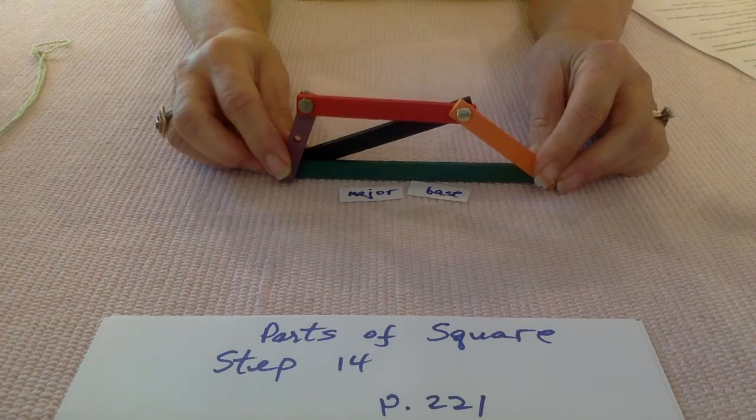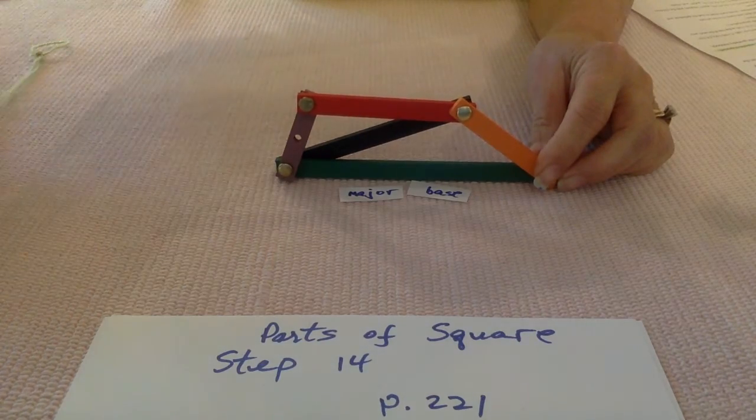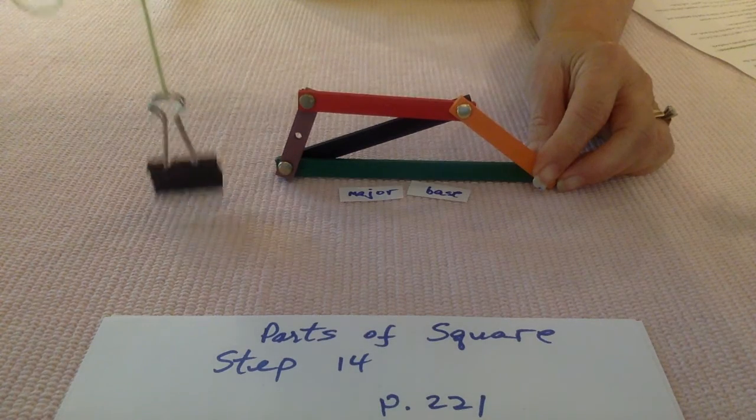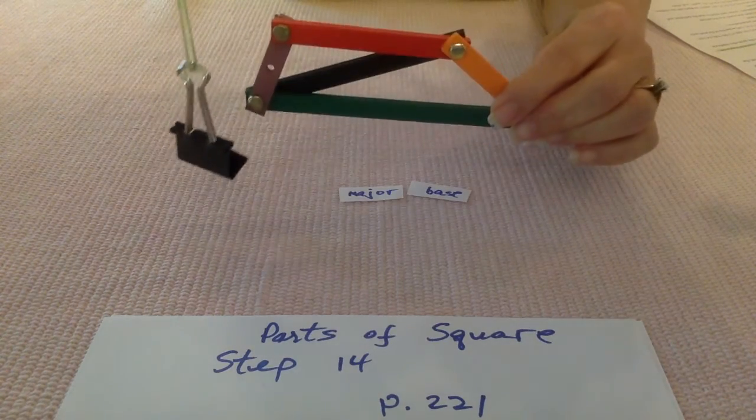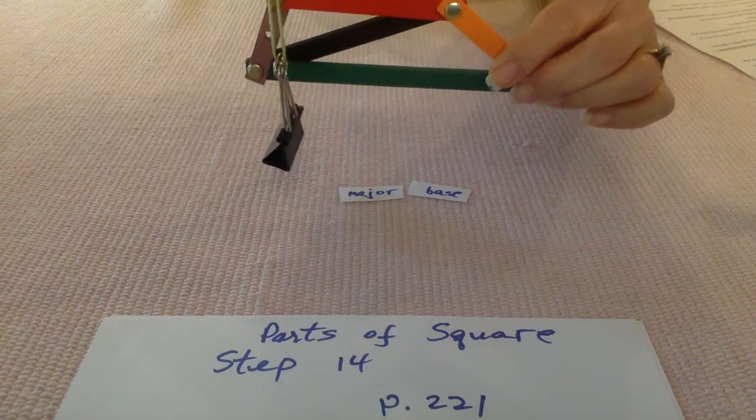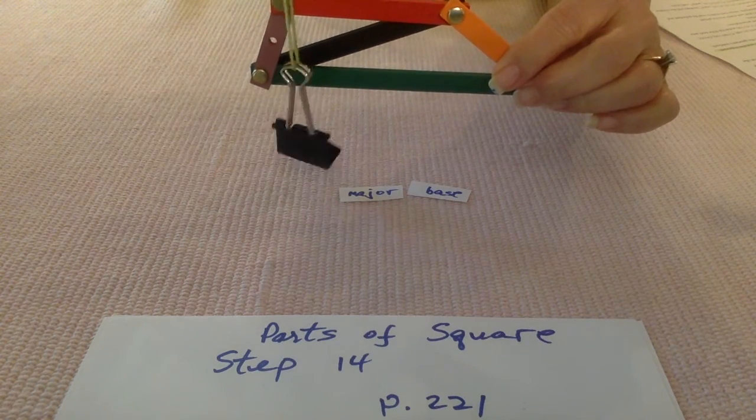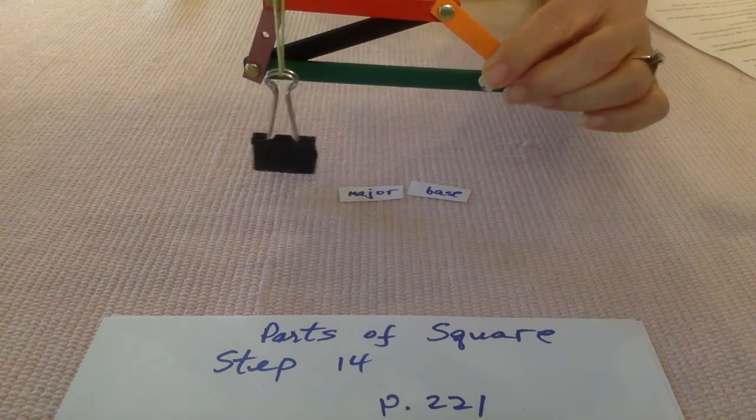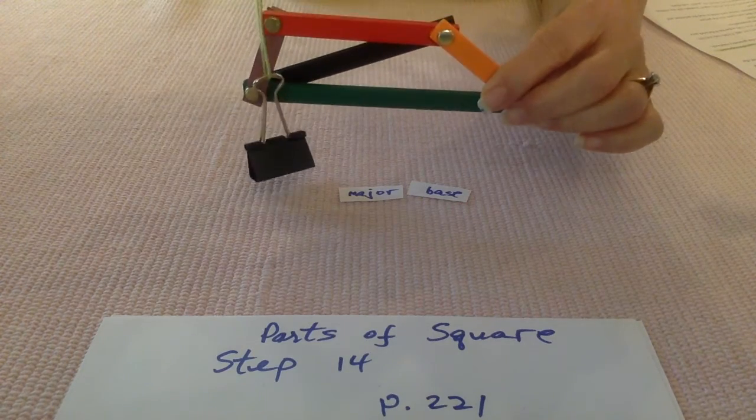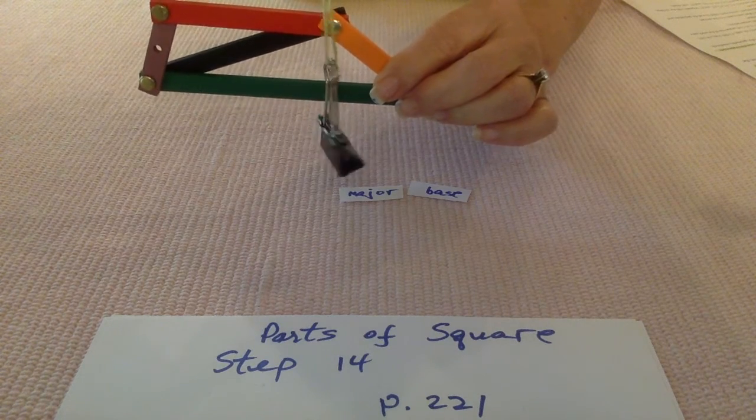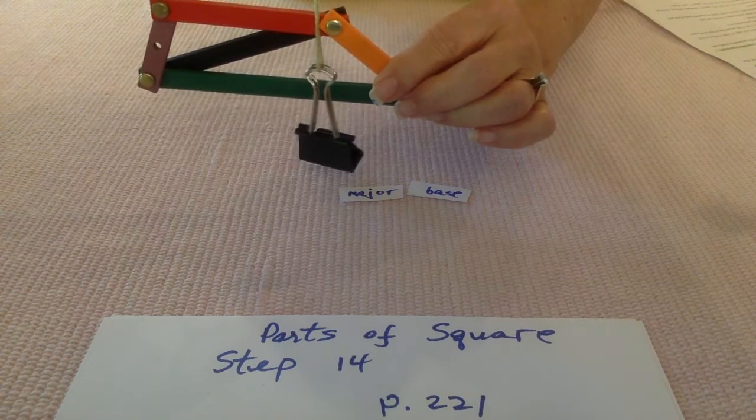And when we are resting on the major base, we take our little plumb line. We can see we have one altitude here and it's an interior altitude, right? The altitude lies inside the trapezoid. And then we have another altitude over on this side, it's also an interior altitude.